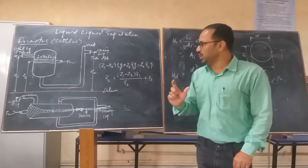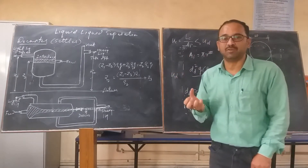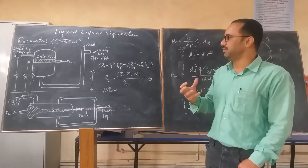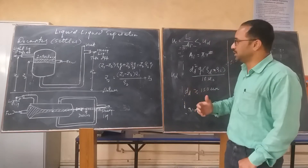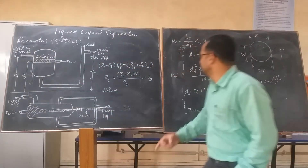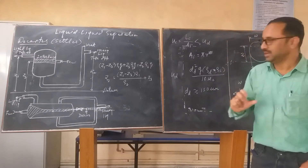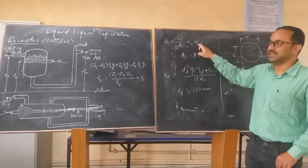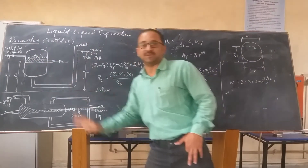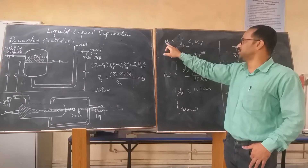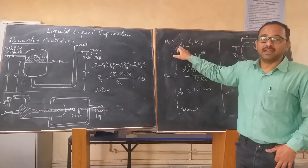In the design aspects of the decanter, we must determine the required volume or holdup of the liquid mixture. The holdup is determined based on the velocity of the continuous phase, which should be less than the settling velocity of the droplets of the dispersed phase, so that the droplets have sufficient time to settle across the interface. The velocity of the continuous phase is the ratio of the volumetric flow rate of the continuous phase divided by the area of the interface.